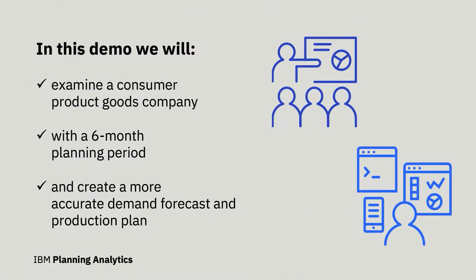In this demo, we'll examine a consumer product goods company with a six-month planning period and see how to create a more accurate demand forecast and production plan.